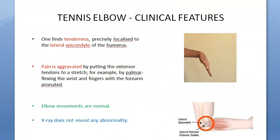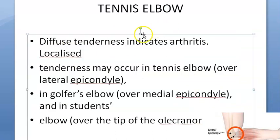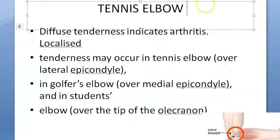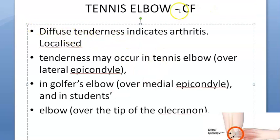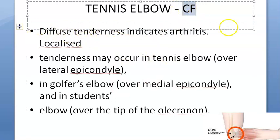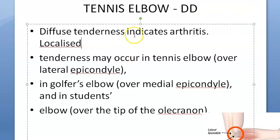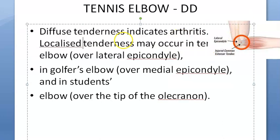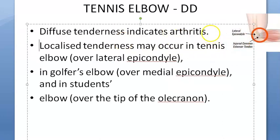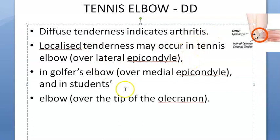Continuing with clinical features and differential diagnosis: if there is diffuse tenderness all over the elbow area, it indicates arthritis. But in tennis elbow, there is localized tenderness specifically over the lateral epicondyle.